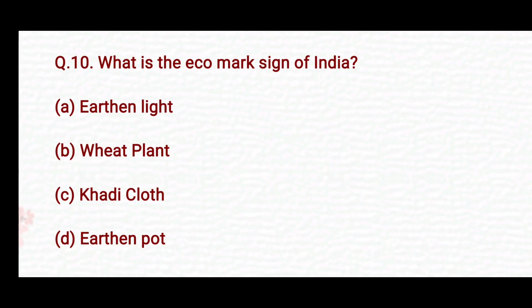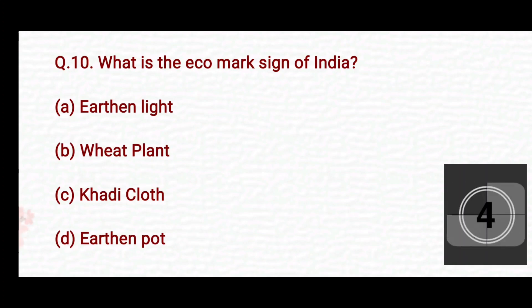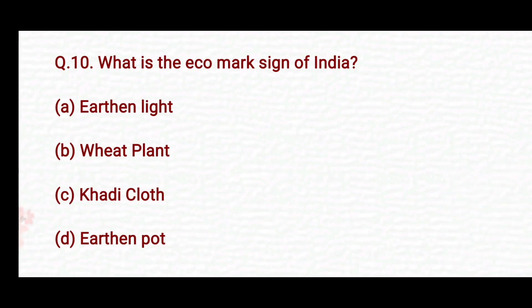What is the eco mark sign of India? Option A: earthen light. Option B: wheat plant. Option C: khadi cloth. Option D: earthen pot. The right answer is Option D — earthen pot.